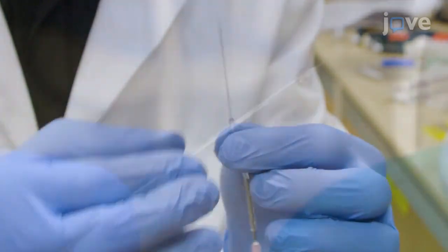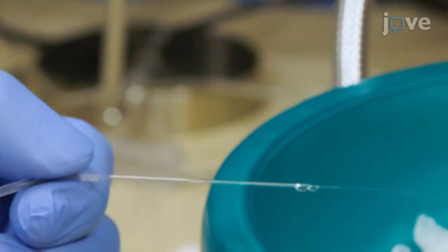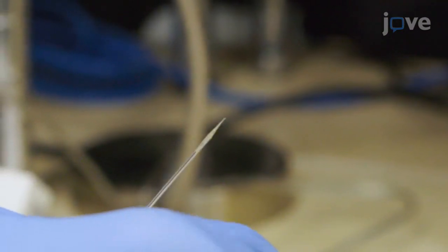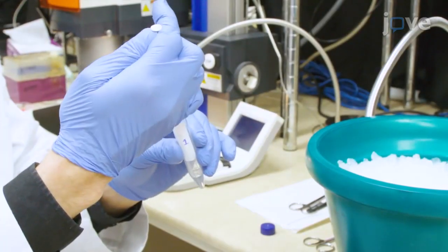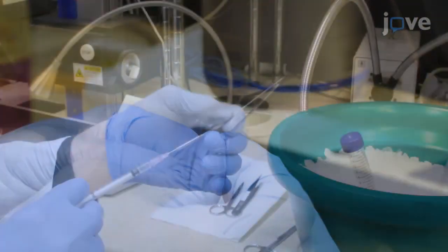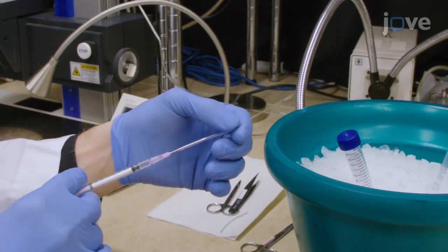Inspect the needle for cell clogging and air bubbles. If cell clogging is observed within the capillary, remove the capillary, re-suspend the cells, and replace it with a new capillary. Use the plunger to push out any bubbles.